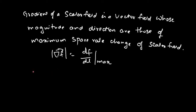Now we think of the vector field, since we only have two types of fields — scalar and vector. We would like to understand what parameters or tools help us understand how the vector field varies with respect to space.